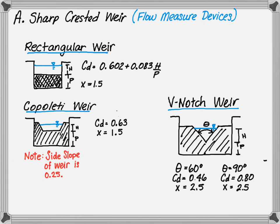And for a 90 degree weir, the coefficient of discharge is 0.8 with an X of 2.5. You should note that a 90 degree weir will allow more flow to pass through it than a 60 degree weir. This can be noted with a higher coefficient of discharge which will result in a larger flow rate.